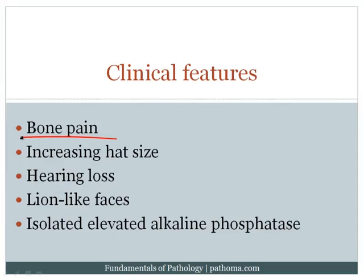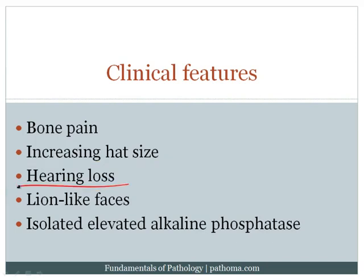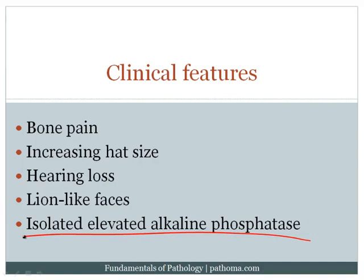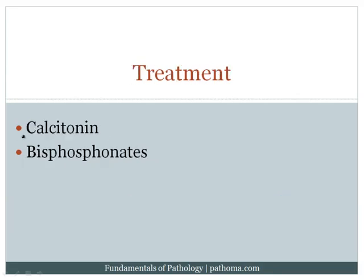Clinical features of Paget's disease include bone pain due to microfractures. A common clinical description is a patient presenting with an increasing hat size because the skull is commonly affected. There can be hearing loss from cranial nerve compression, and a lion-like facies when facial bones become thick and sclerotic. Very high yield: patients often have an isolated elevated alkaline phosphatase, because osteoblasts are actively laying down bone. Calcium, phosphate, and PTH are normal, but alkaline phosphatase is elevated.